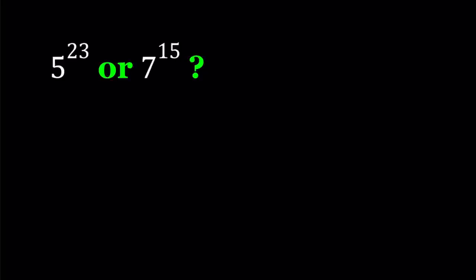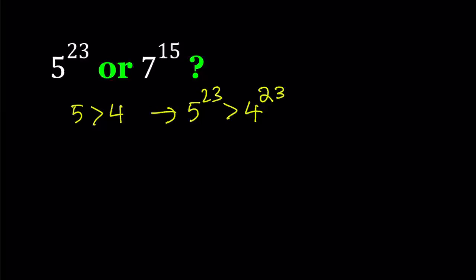First of all, let's compare 5 to 4. Obviously, 5 is greater than 4. That implies, if you raise both sides to the power 23, 5 to the power 23 is greater than 4 to the power 23. The reason why I said we're going to use powers of 2 is because 5 is close to 4, and 4 is a power of 2.